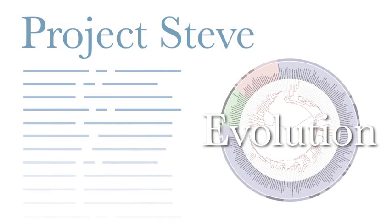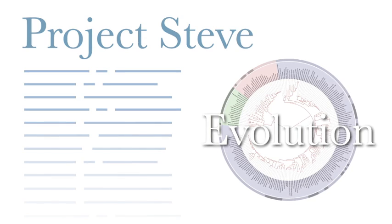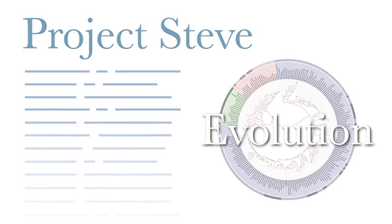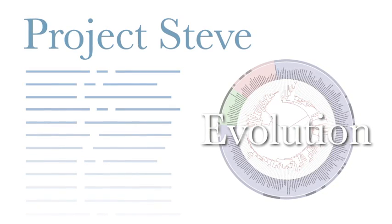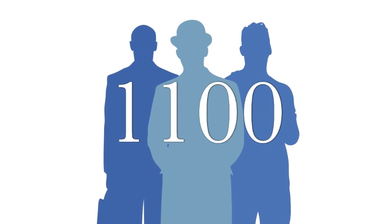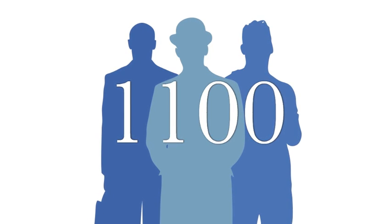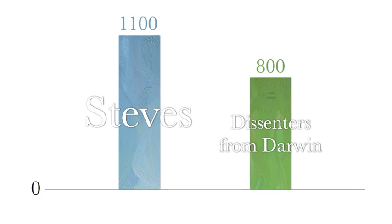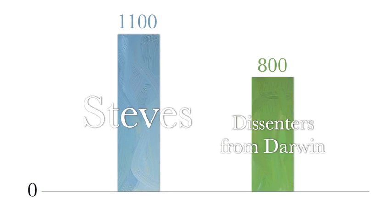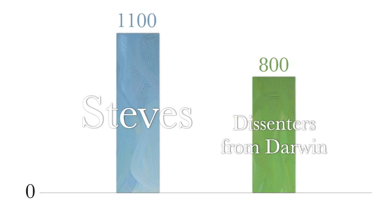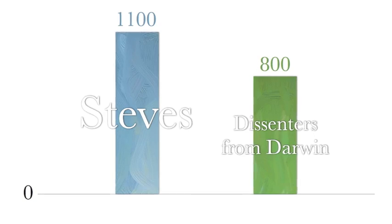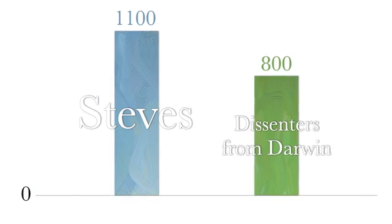In response to lists like Dissent from Darwin, the National Center for Science Education introduced Project Steve, which is a list of scientists with the name Steve who support evolution. As of 2011, over 1,100 scientists with the name Steve have signed the list. There are more scientists with the name Steve that publicly support evolution than there are scientists of any name in the entire world who publicly deny it.